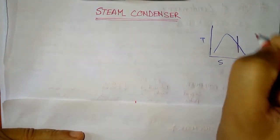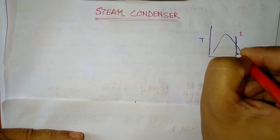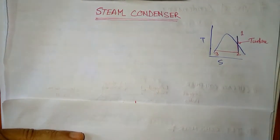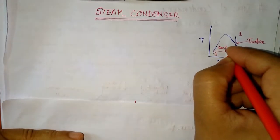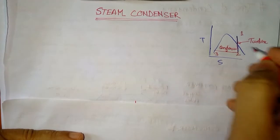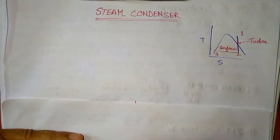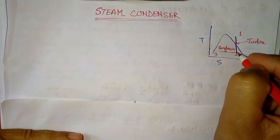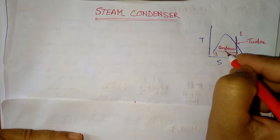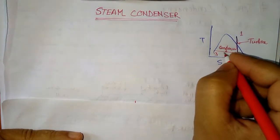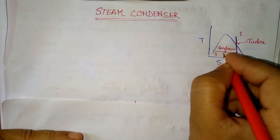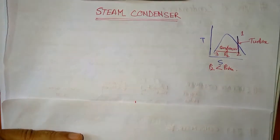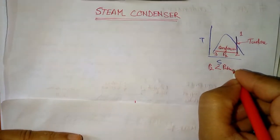In the TS diagram of a Rankine cycle, we have points one to two representing the turbine, and two to three representing the condenser. After expansion of steam from one to two in the turbine, the exhaust steam enters into the condenser, where it is condensed to saturated liquid. The condensing pressure P2 is less than atmospheric pressure P_atm.